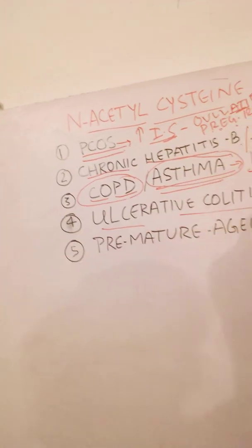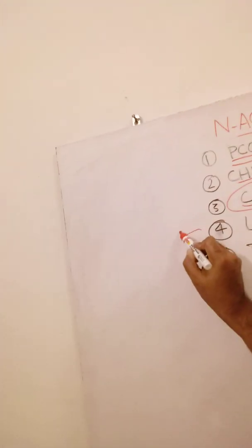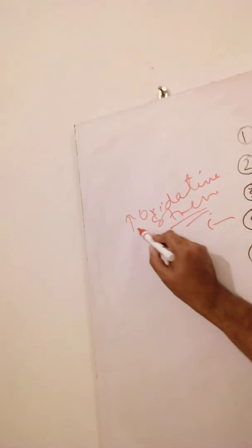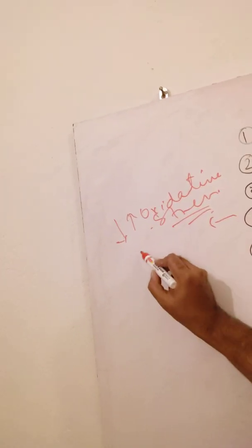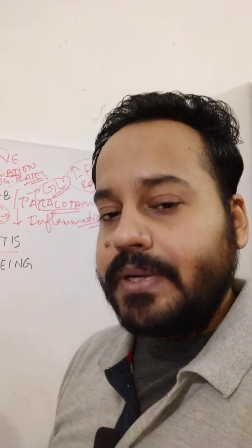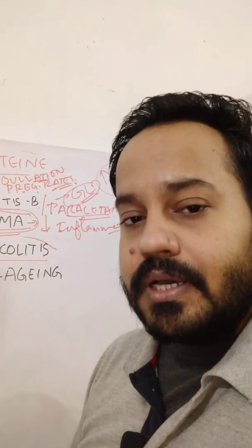The fourth benefit is for ulcerative colitis, where there is inflammation of the lining of your gut and an increase in oxidative stress, meaning less intrinsic antioxidants. N-acetylcysteine boosts your intrinsic antioxidant glutathione, decreases oxidative stress, and helps in the formation of tight junctions, exerting a protective effect on the gut lining. It is therefore very beneficial for inflammatory gut conditions or leaky gut, and it also helps in proper recovery.